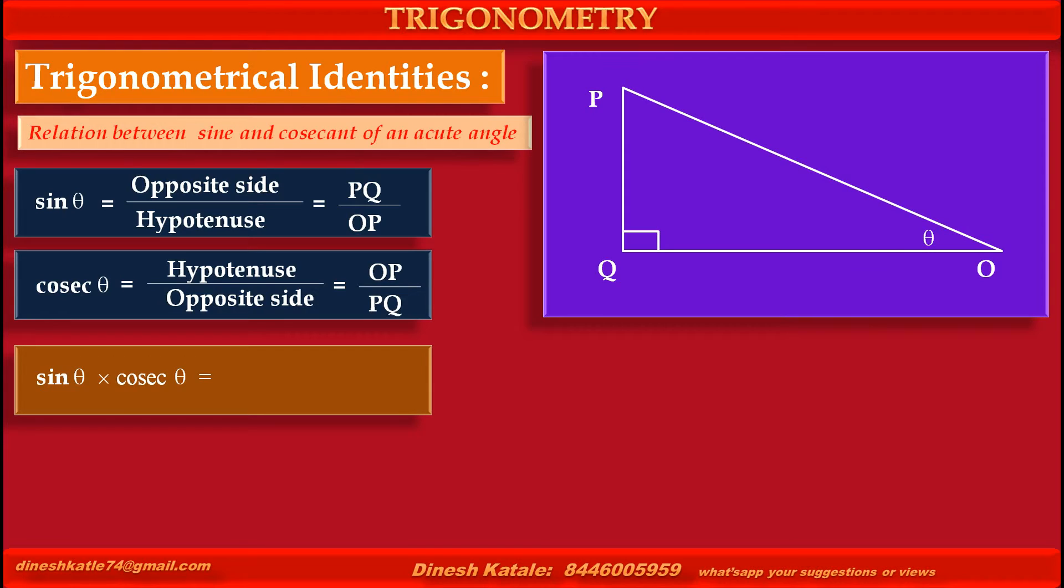Therefore, product of these two ratios, sine theta into cosec theta is equal to value of sine theta, PQ upon OP, into value of cosec theta, OP upon PQ.